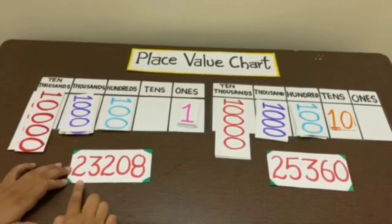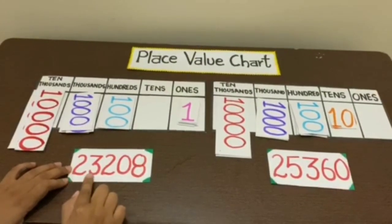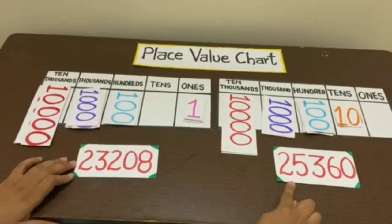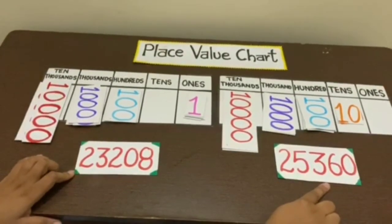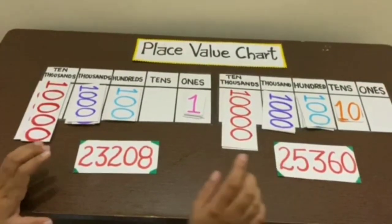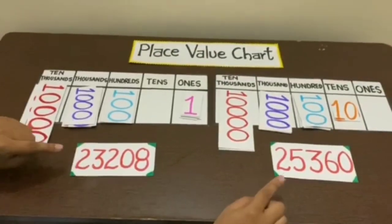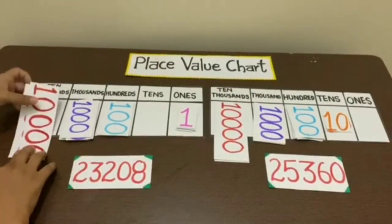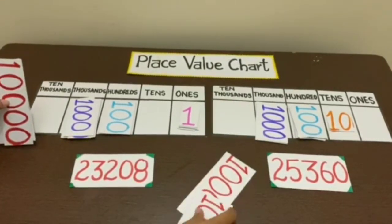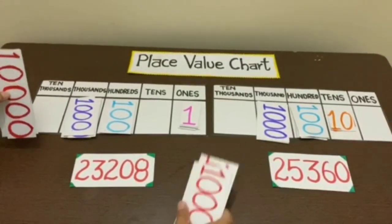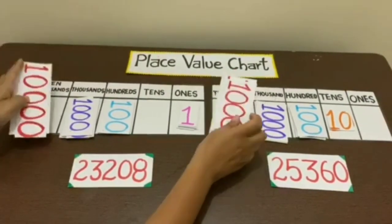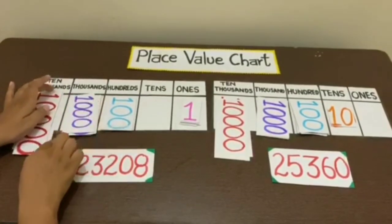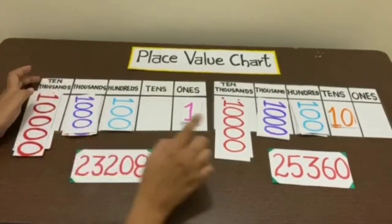Now the next figures are 23,208 and 25,360. To compare these, first of all we will see that at the 10,000s place on both sides there are 20,000. So it is equal, then we will proceed to the next place on the chart, that is thousands.